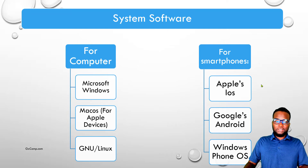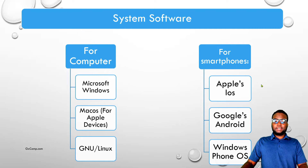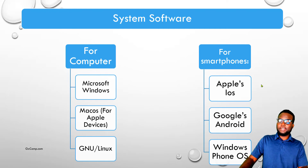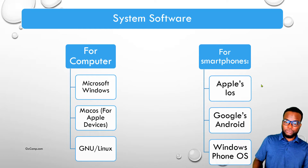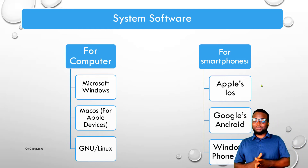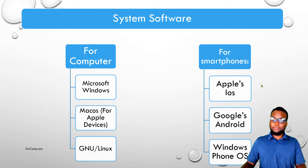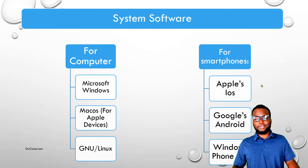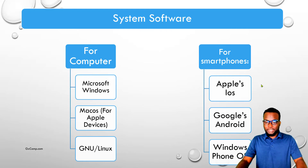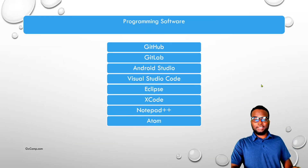System software includes the operating system: Microsoft Windows, Mac and Apple devices, and Linux — a free open source operating system. For smartphones, the operating system includes iOS (Apple), Android (Google), and Windows Phone — all categorized as system software.